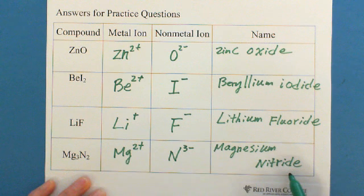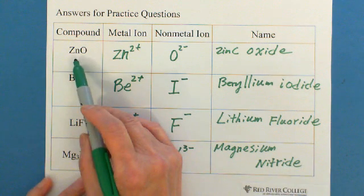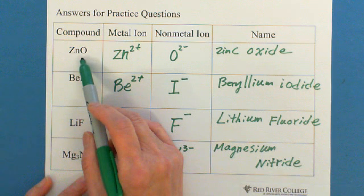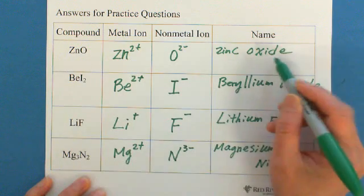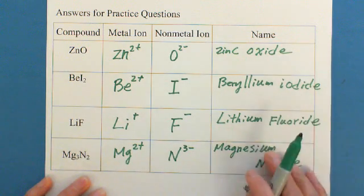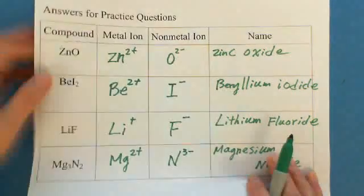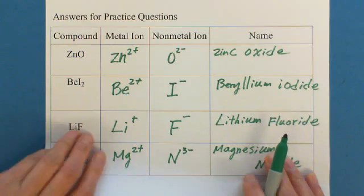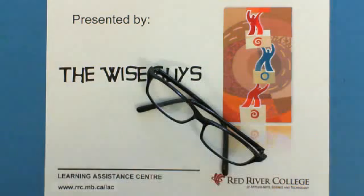So then we can see as long as binary compound, ionic compound, the end always with IDE. So this is presented by Wiseguys. Thank you.